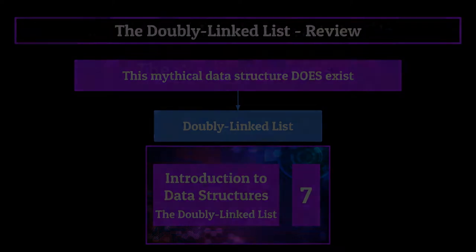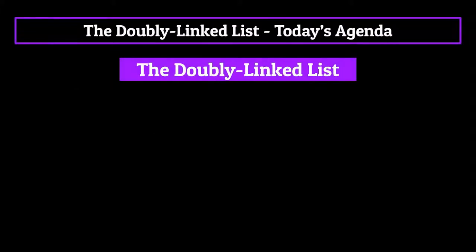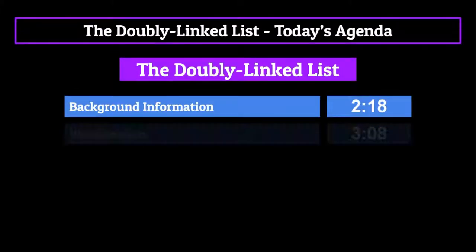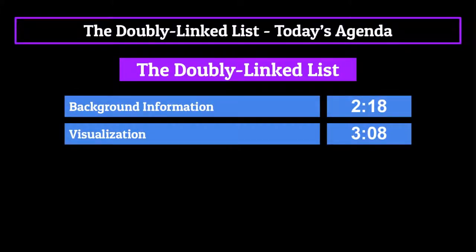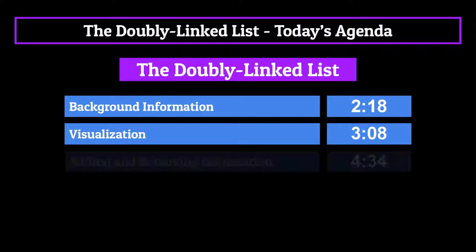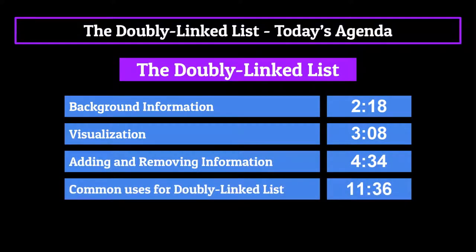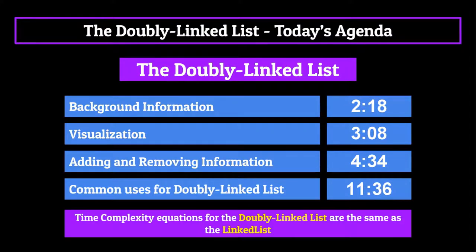All jokes aside, today we're going to be covering the doubly linked list. We'll start off with some background information, dive into a visualization of how they're actually set up, go over adding and removing nodes from them, and then finally talk about some common uses for them in the real world. There will be no time complexity equations today, because they're going to be exactly the same as they were for a regular linked list, and for the exact same reasons.